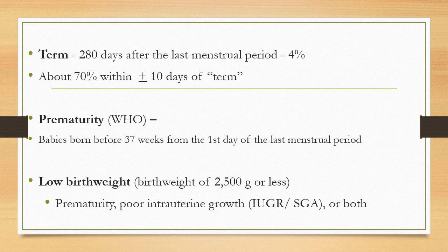Low birth weight is defined as any baby born with a birth weight of 2500 grams or less. A low birth weight baby can be premature, but not all low birth weight babies are premature. Some full-term and even post-term babies may weigh less than 2500 grams, and in that case they are labeled as intrauterine growth restricted (IUGR) or small for gestational age.